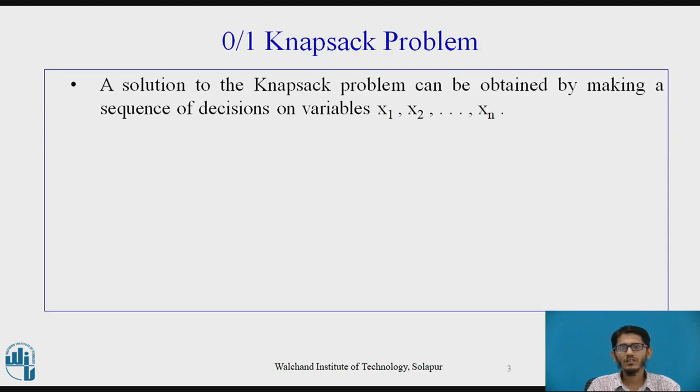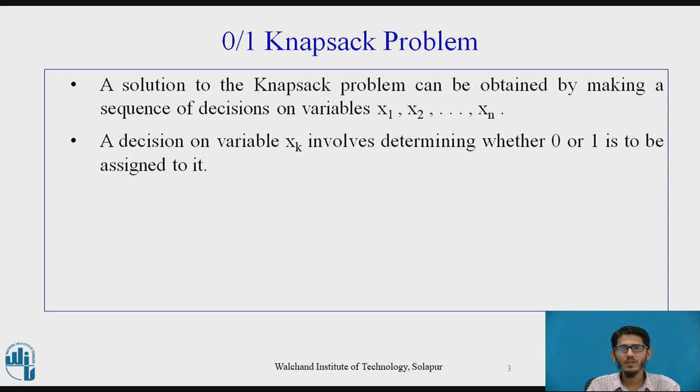First of all, let us try to understand what the zero-one knapsack problem is. A solution to the knapsack problem can be obtained by making a sequence of decisions on the variables x1, x2, x3 up to xn. A decision on the variable xk involves determining whether a value of 0 or 1 is to be assigned to it. That is, xk could either take the value of 0 or 1.